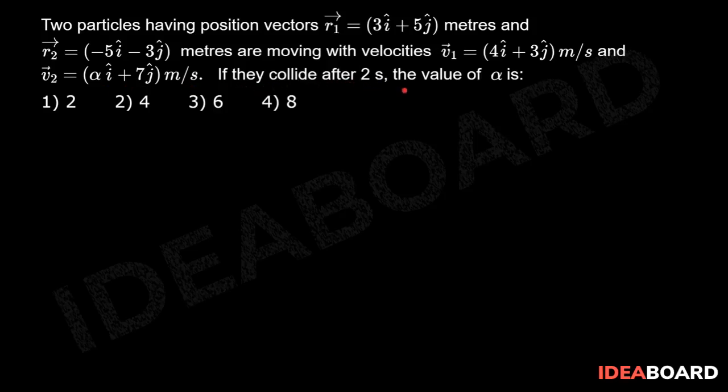after 2 seconds, the value of alpha is. Now they collide after t equal to 2 seconds, so that r1 bar plus v1 bar into t equal to r2 bar plus v2 bar into t.